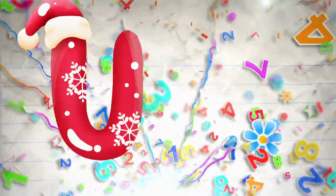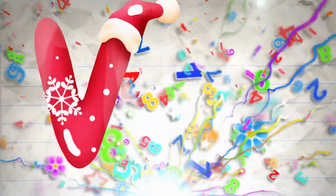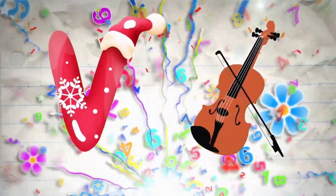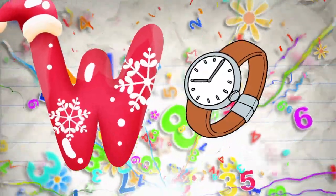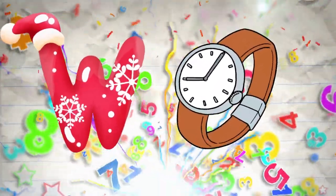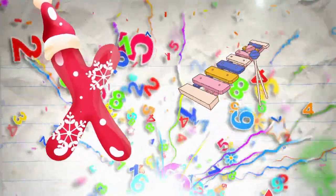U is for umbrella, u-u-umbrella. V is for violin, v-v-violin. W is for watch, w-w-watch. X is for xylophone, x-x-xylophone.